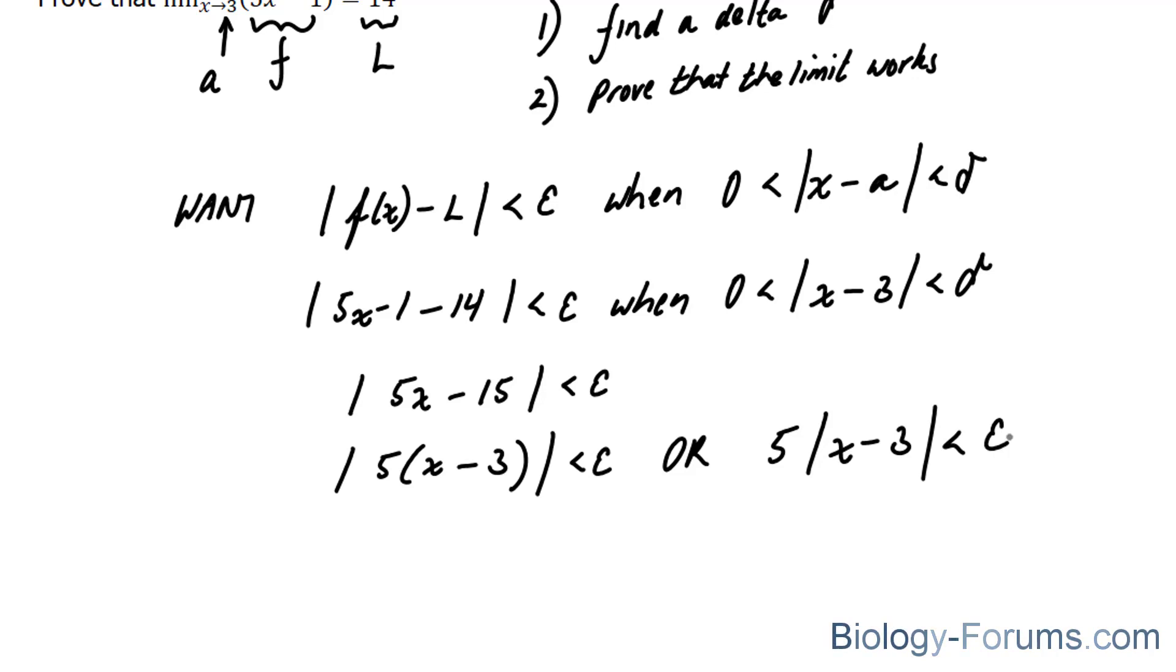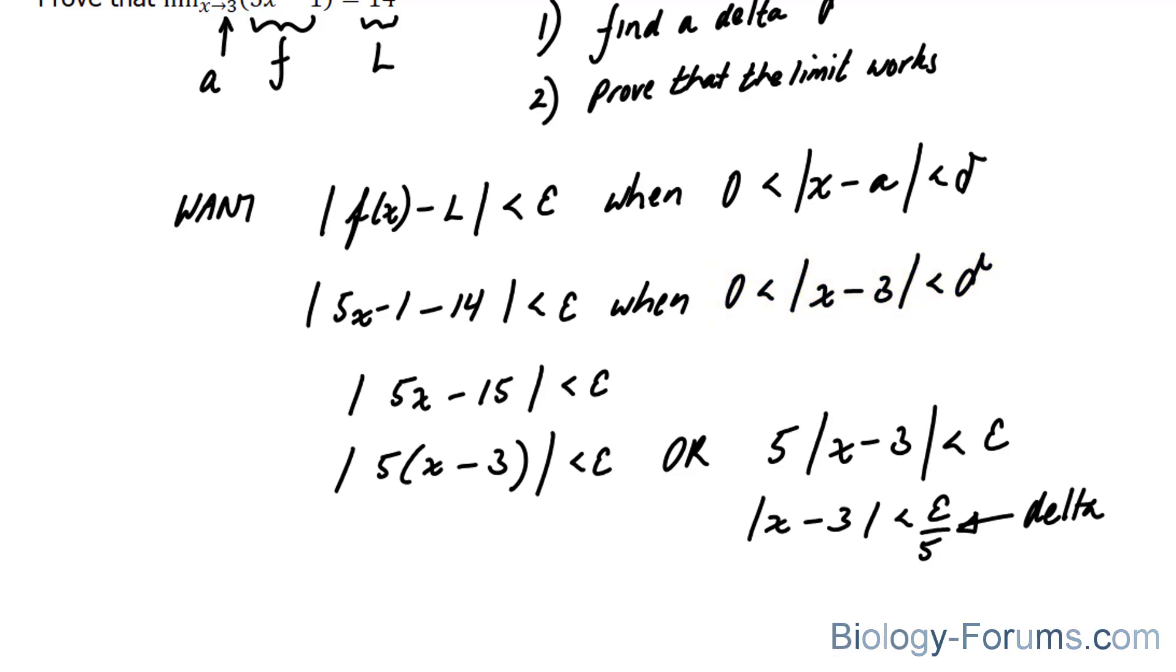So therefore, if I were to isolate for x minus 3, I would end up with the absolute value of x minus 3 is less than epsilon over 5. And this is what I will choose as my delta that fulfills part 1, stated above.